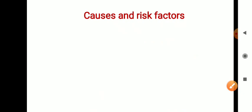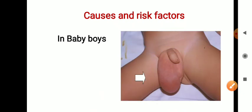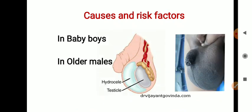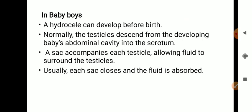Now we will see the causes and risk factors. There are mainly two categories: first, in baby boys, and second, in older males. In baby boys, hydrocele can develop before birth. To understand how, we will see how the testicle descends in the next slide.